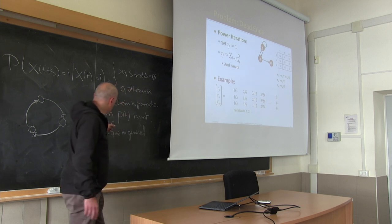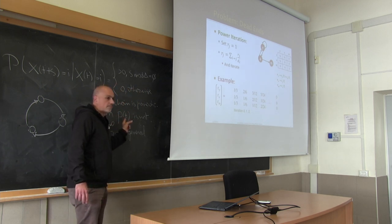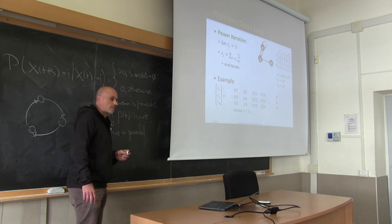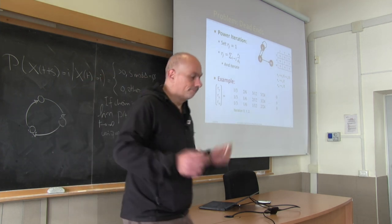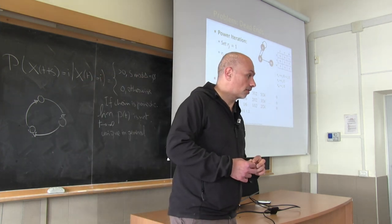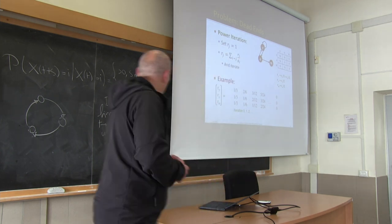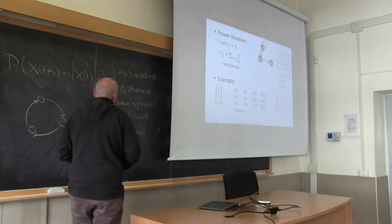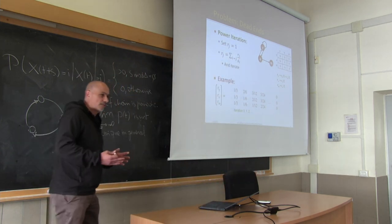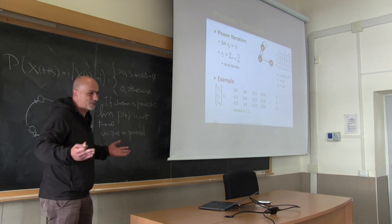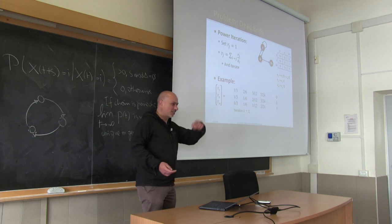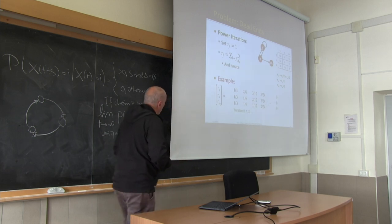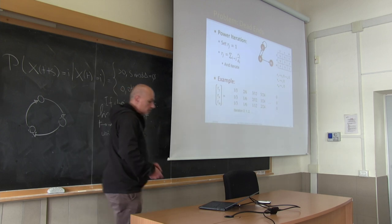If the chain is periodic, the limit is not defined in general. You can have multiple stationary distributions — or rather, no stationary distribution at all. The distribution oscillates between one or more distributions.